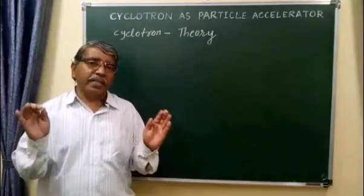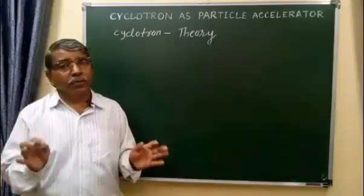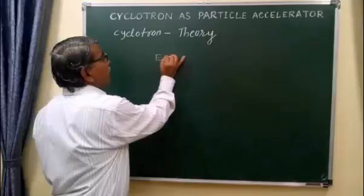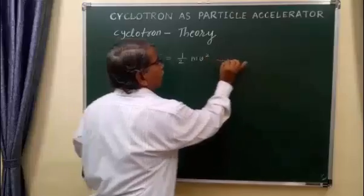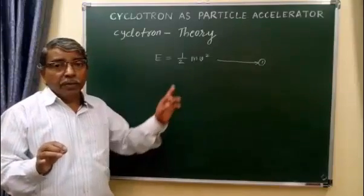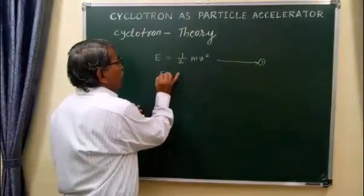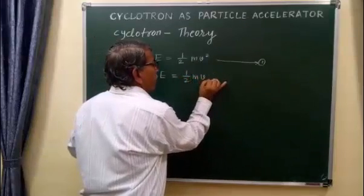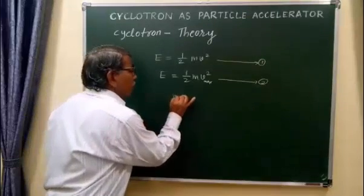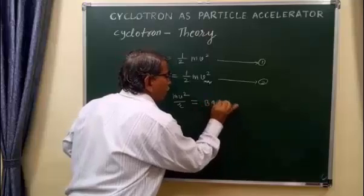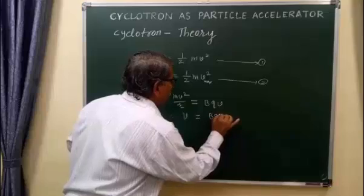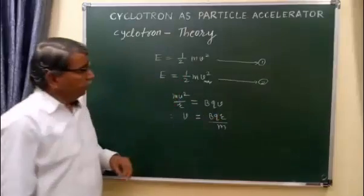The next part of the theory of the cyclotron is the expression for maximum energy attained by the positive ion in the cyclotron. We know that the expression for energy is given by E = ½MV². For maximum energy attained by the positive ion, the velocity should be maximum. So this expression becomes: E = ½M·V_max². This is equation number 2. But we know from the force balance that centripetal force equals magnetic force, from which velocity V = BQR/M. This is expression number 3.